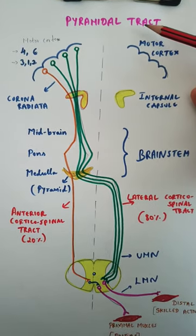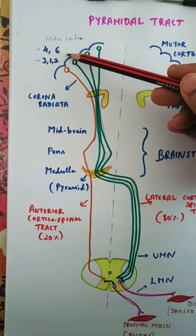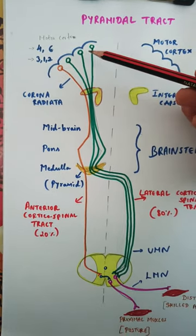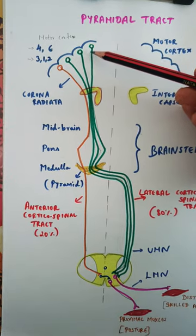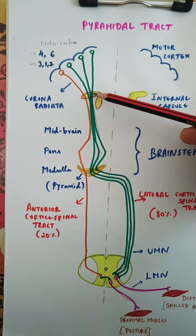The pyramidal tract or corticospinal tract starts from the motor cortex areas 4, 6, 3, 1, 2. Once the neurons start, the axons spread out, which is called corona radiata. They merge at the posterior limb of internal capsule.